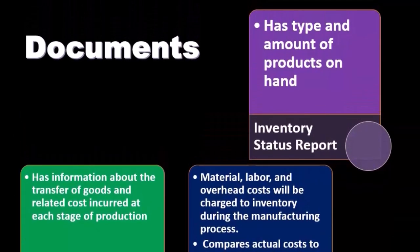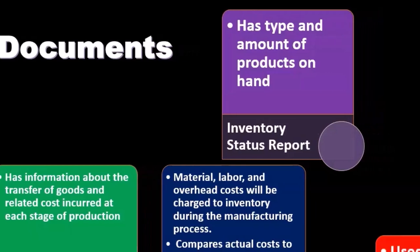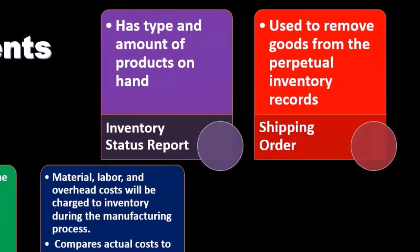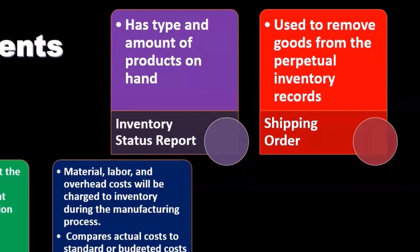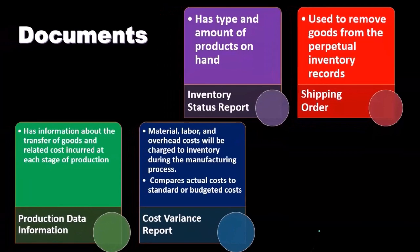The inventory status report includes the type and amount of products on hand. Then we have the shipping order, which is used to remove goods from the perpetual inventory records. When we think about the shipping order, we're thinking about orders going out — meaning the goods were likely sold and are no longer on our books. This form triggers the transaction that removes inventory from the business's books.